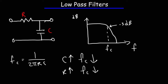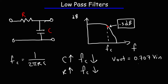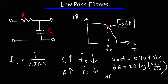At the cutoff frequency, the output voltage will be 70.7% of the input voltage, giving you a decibel drop of 3 dB. You can calculate that using the formula: decibels equals 20 log times the ratio of output voltage to input voltage. If you type in 20 log 0.707, you get negative 3.01 dB, which corresponds to a 3 dB drop.